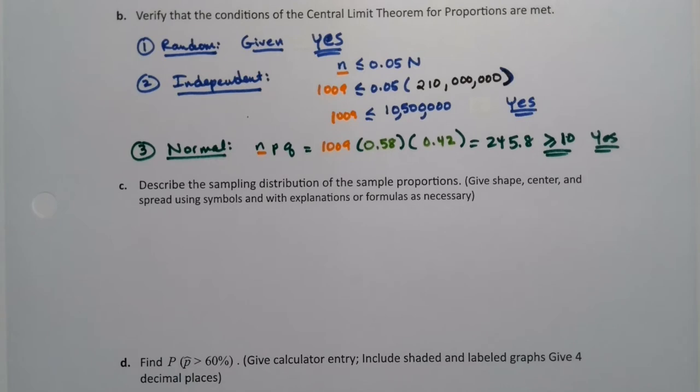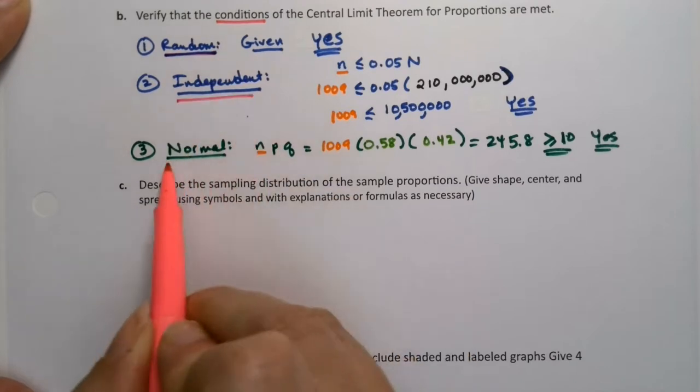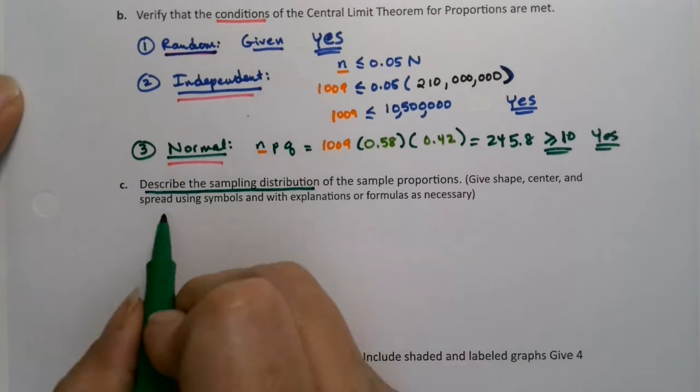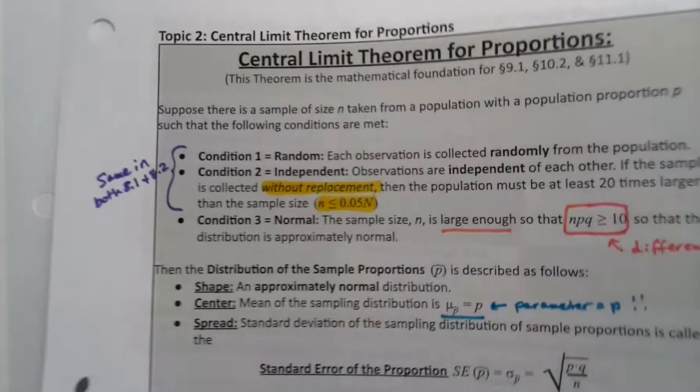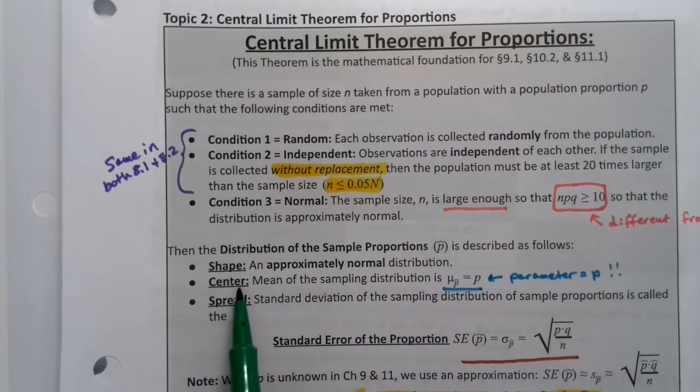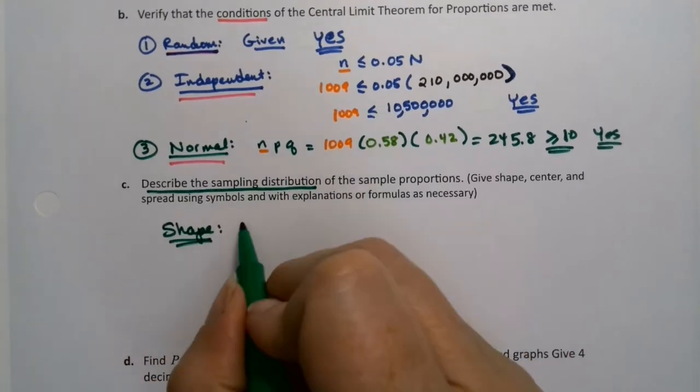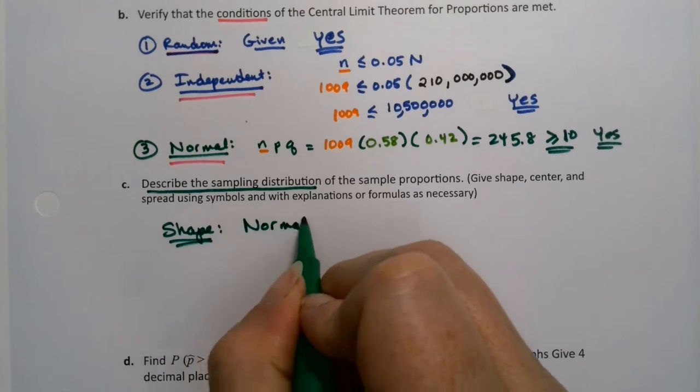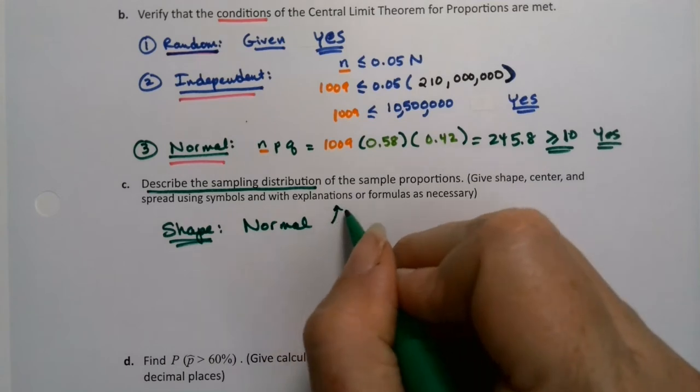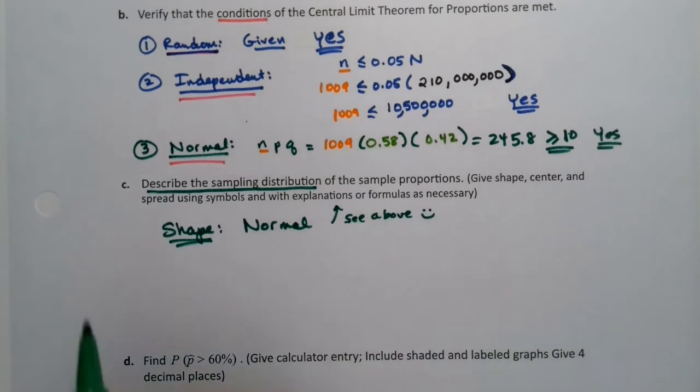Now that we know the three conditions—so the three conditions are random, independent, and normal—then we can describe the sampling distribution, which is the other three parts. If you look at the box, I broke it up. Three conditions: random, independent, normal. And then describing the distribution is shape, center, spread. All right. So shape is normal. You know why? Because we proved it up above. So we're good there. Explanation not necessary because the explanation is above.